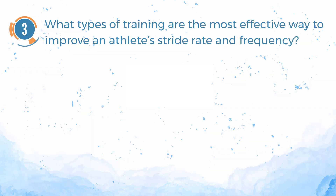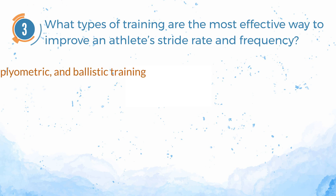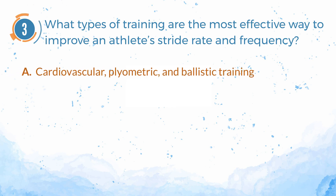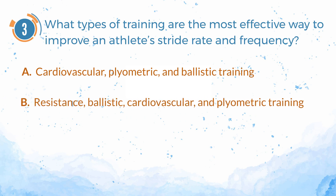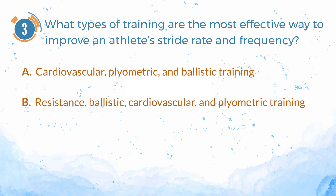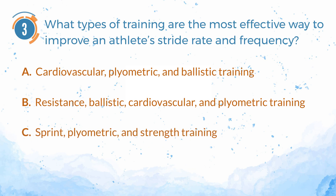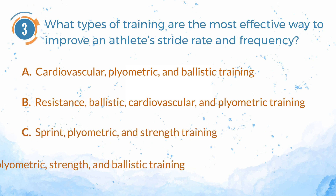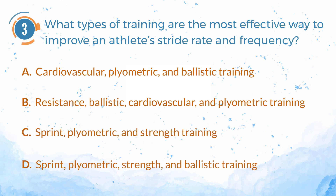Number 3. What types of training are the most effective way to improve an athlete's stride rate and frequency? A. Cardiovascular, plyometric, and ballistic training. B. Resistance, ballistic, cardiovascular, and plyometric training. C. Sprint, plyometric, and strength training. D. Sprint, plyometric, strength, and ballistic training.